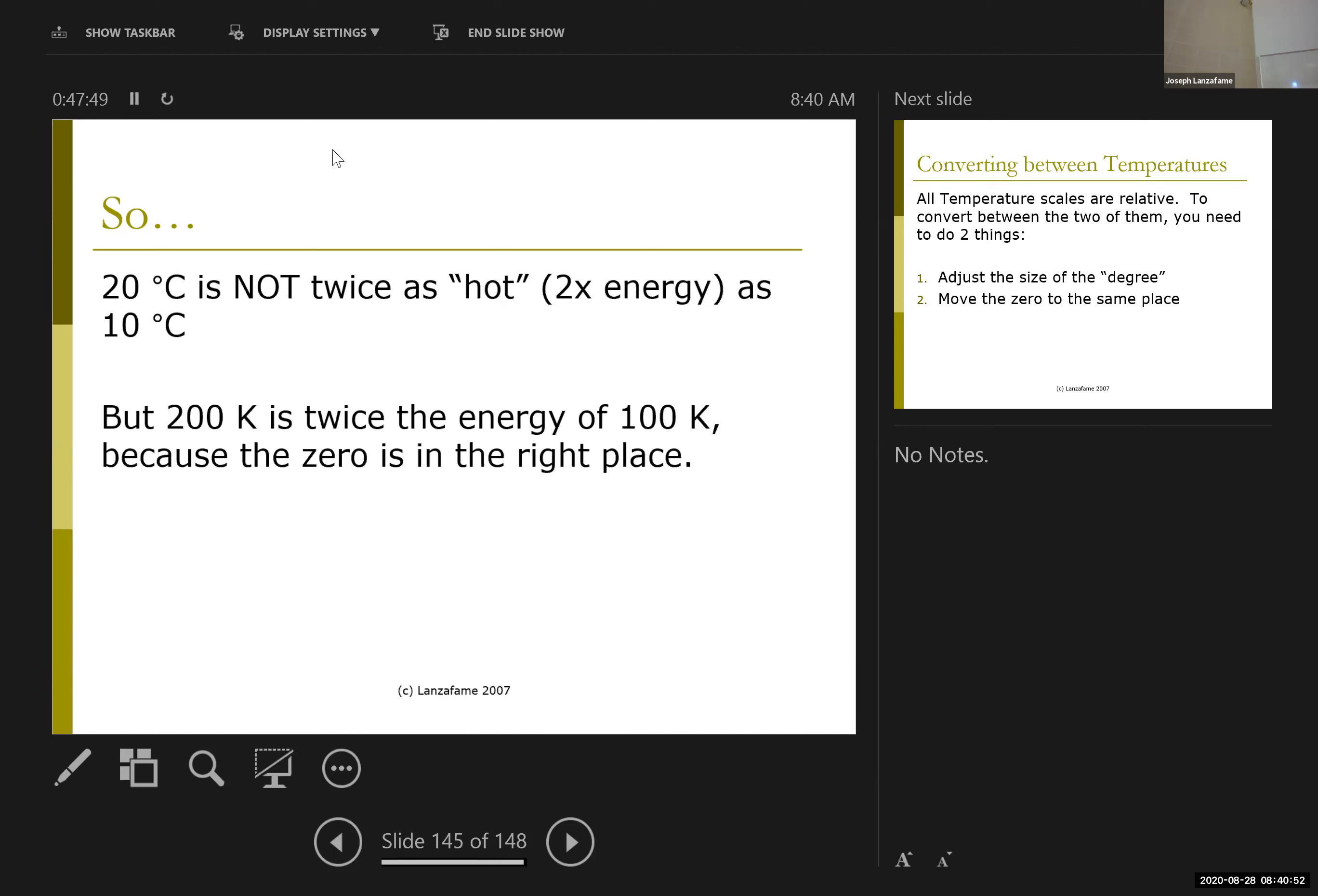So if you're in Kelvins, my relative temperature is also the relative energy. If I go from 200 Kelvins to 100 Kelvins, I have half the amount of molecular energy exactly. Whereas if I go from 20 Celsius to 10, who cares? If I go from 20 Fahrenheit to 10, who cares? It's colder. I might need to put a coat on. But it doesn't tell me anything quantitatively about the amount of energy.